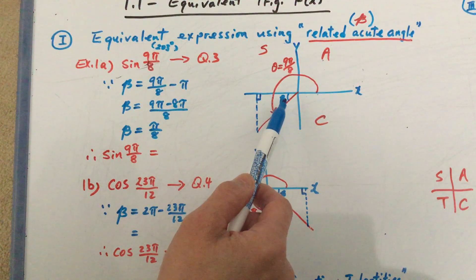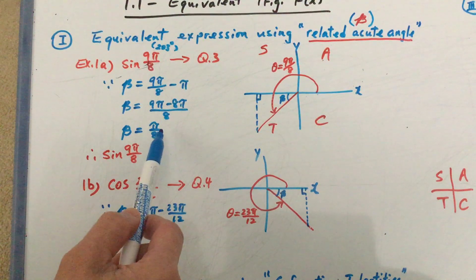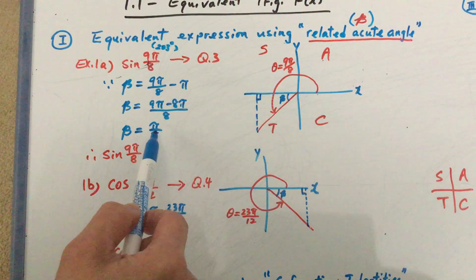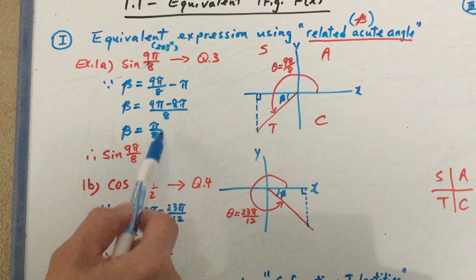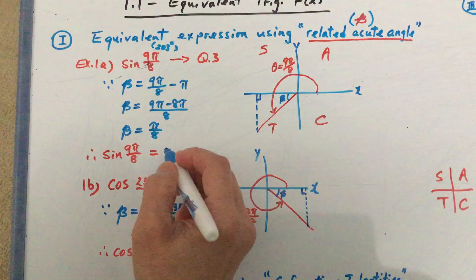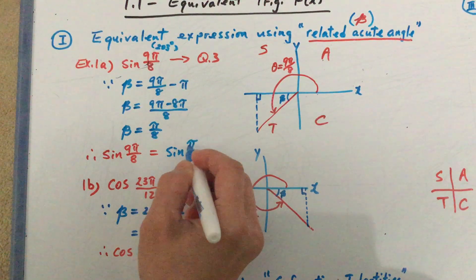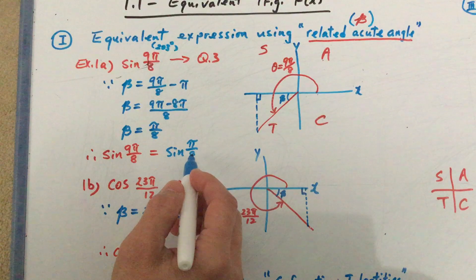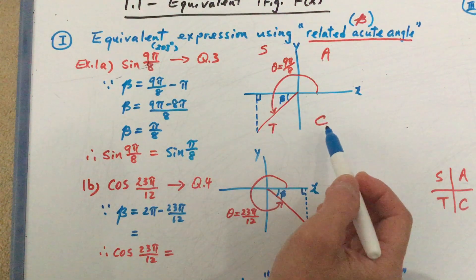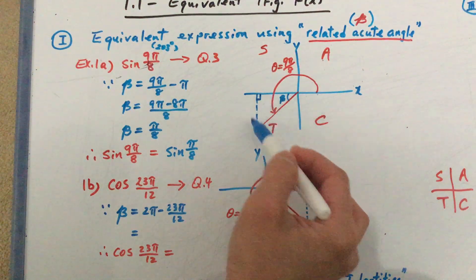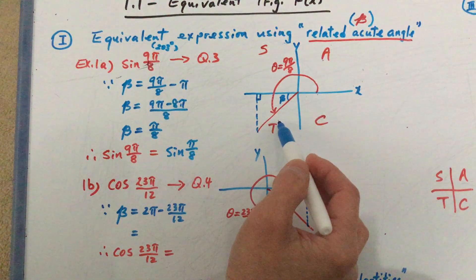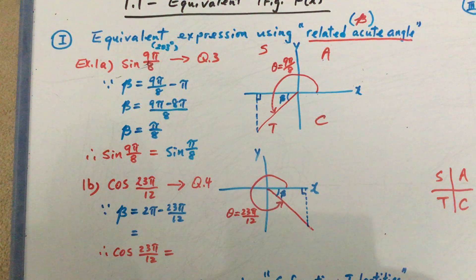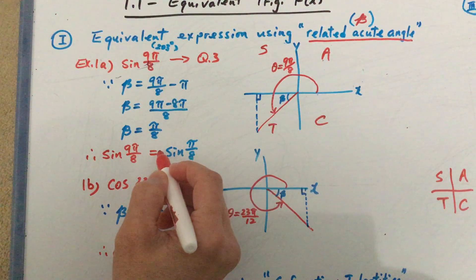We know that this angle here is pi over 8. The related acute angle is always less than 90 degrees, since it is one of the angles within the reference triangle. Using this, we can say sine of 9π over 8 is also equivalent to a sine of pi over 8. This is the principal angle, but this is the related acute angle. However, because of the CAST rules, in quadrant 3 only tangent is positive, so using the related acute angle — which is always positive — you need to add a negative sign in front.